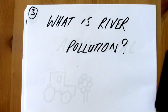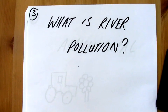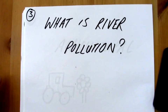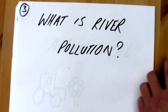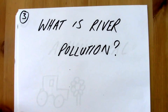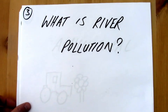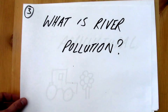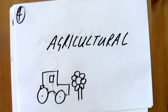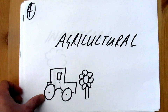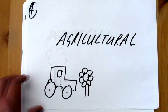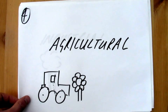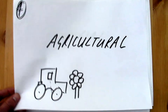Firstly, before we can start to compare them we need to answer the question: what is river pollution? You should remember that river pollution is when the river becomes contaminated with things that wouldn't usually be in it. We gave some examples — agricultural pollution, which means waste from farming, such as nitrogen put on the land that eventually flows into rivers and could kill the fish.